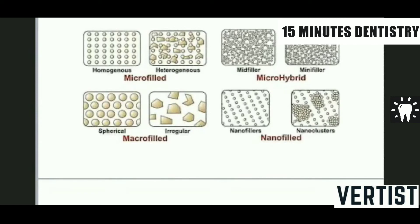In microfill, there are spherical as well as irregular particles. In microhybrid, you get the smallest particles in the midfill and minifill. In nanofill, you have nanofill and nanocluster. This is how, according to the particle size, the matrix of the composite is made — because of the specific purpose and specific reason of the content of these fillers.